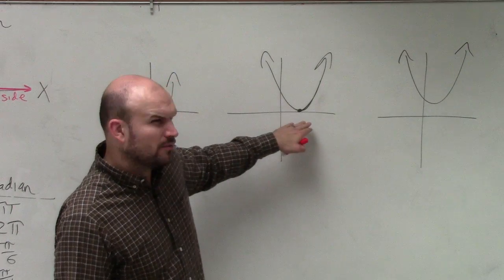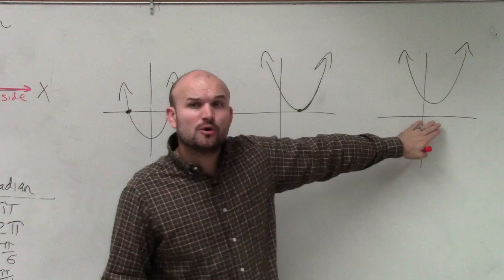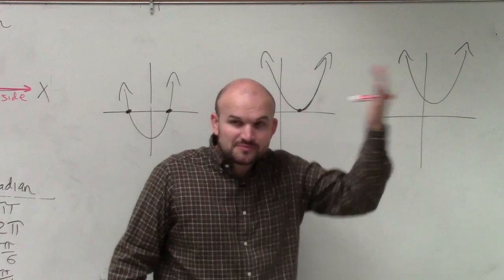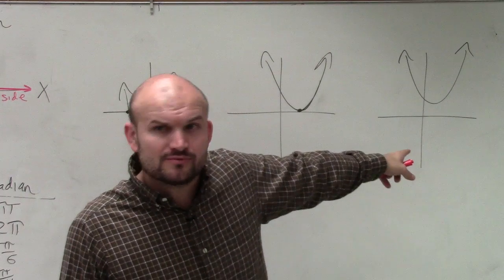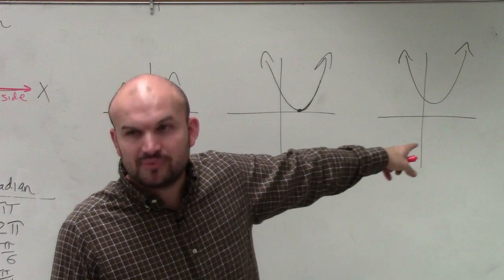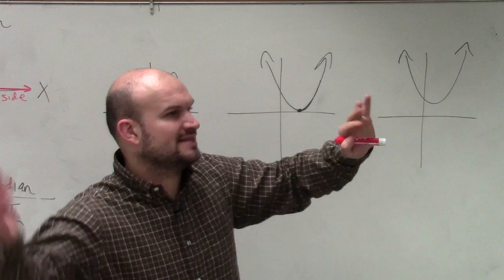And here, there's only one solution. And then here, there's no real solutions. However, as we know, there has to be two solutions. And what we found out was there were two solutions. They were just complex. They're plus or minus i of some sort.